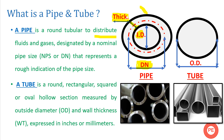The nominal diameter may be greater than, equal to, or less than the OD. This depends on your schedule number. As per the schedule number, the thickness of your pipe varies, and accordingly the internal diameter of a pipe varies. We can say that the outside diameter of a pipe remains fixed, but with variation in thickness the inside diameter may change.